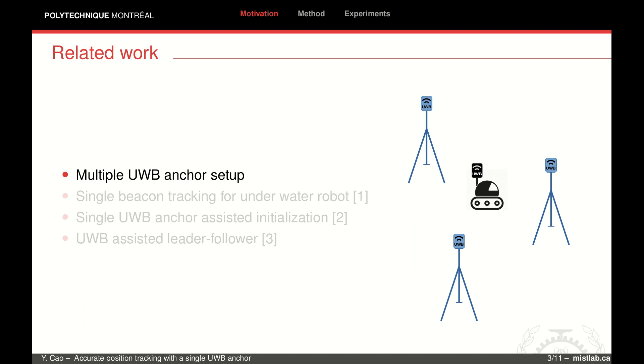UWB is known for its accurate ranging performance. Most UWB localization solutions are based on a multi-anchor arrangement using trilateration. However, we want to have a minimal number of anchor dependencies, ideally a single anchor that can be dropped when needed.